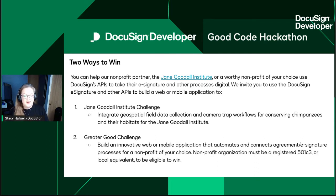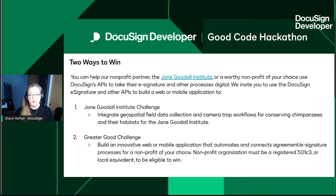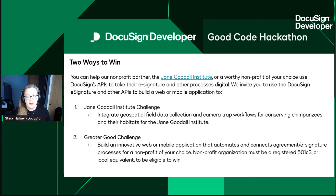Esri is going to help you out. We also have our Greater Good Challenge, where you build an innovative web or mobile application that automates and connects agreement and/or e-signature processes for a nonprofit of your choice. The nonprofit must be a registered 501c3 or local equivalent. If you're outside of the U.S., it needs to be a local equivalent. Also, you do not have to have permission from the nonprofit in order to start working on this project, so you can go ahead and get started now.